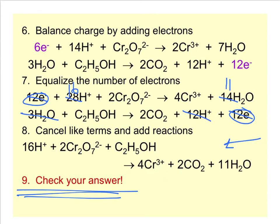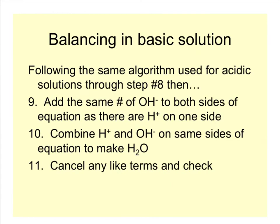Very quickly, I want to show you what you do if you have a basic solution. You actually follow the exact same algorithm. You just have to do a little bit more work. When you get to step 8, after you've added H+, there will be H+ in your basic solution. What you do is that you then kind of sort of titrate it over to basic solutions. So what you do is you add as many OHs to both sides of the reaction as you had H+ left over on one side.